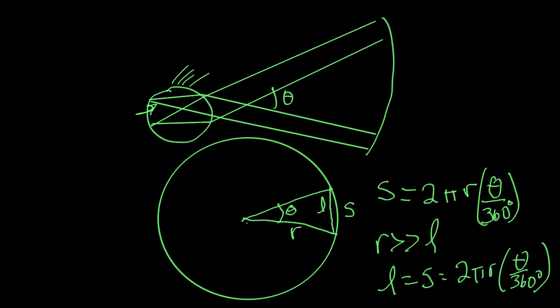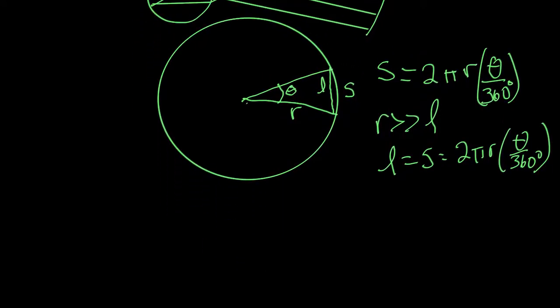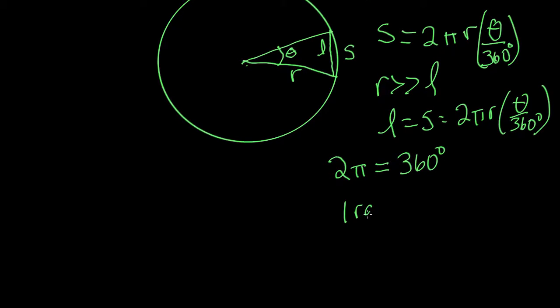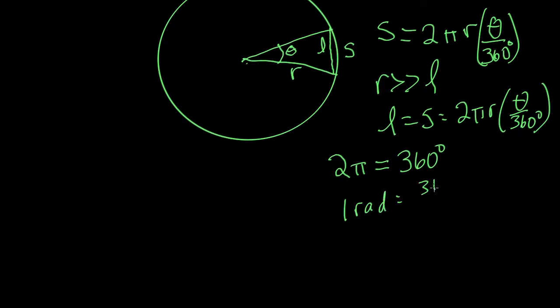Now in math, we often use angles, not in degrees, we use them in radians. And so a radian, remember there's 2 pi radians is equal to 360 degrees. Or one radian is equal to 360 divided by 2 pi degrees. So I can rewrite my equation, which is that l is equal to r theta because the 2 pi over 360 cancels out if theta is in radians.